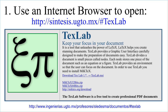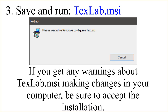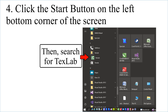Use an Internet Browser to open the following URL. Click the Download link for the latest version of TeXstudio. Save and run TeXstudio.msi. If you get any warnings about TeXstudio.msi making changes to your computer, be sure to accept the installation. Click the Start button on the lower-left corner of the screen, then search for TeXstudio.